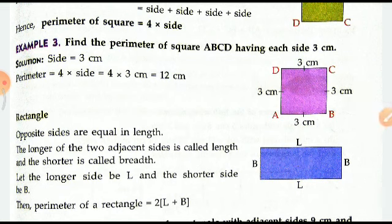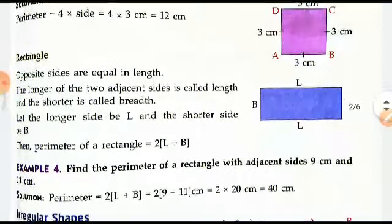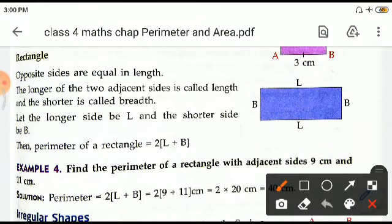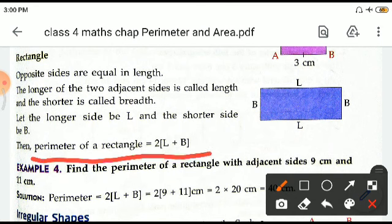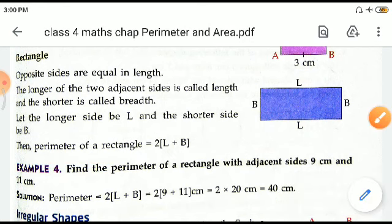For a rectangle, the opposite sides are equal, so the perimeter formula has to be twice length plus breadth. If the length is 9 centimeters and breadth 11 centimeters, 2 into 9 plus 11, see 9 plus 11 is 20, so 2 into 20 which is 40 centimeters.